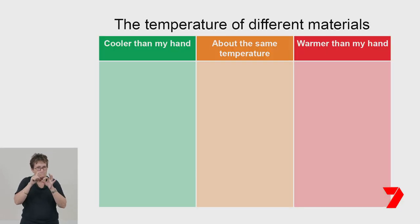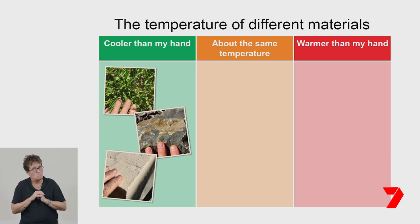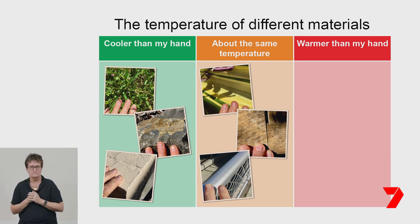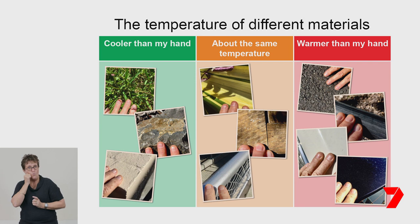I've used photos of the materials tested to show the results of our investigation in a table. A table will help us organise our observations by grouping objects that felt cooler, the same, or warmer than my hand. Our data shows that three materials were cooler than my hand, three were about the same temperature, and four materials were warmer. All the materials had been in the sun for the same amount of time, but the data show that some things were warmer and some cooler — so we've answered our scientific question.